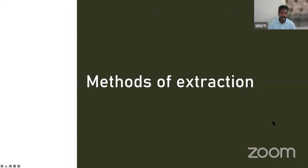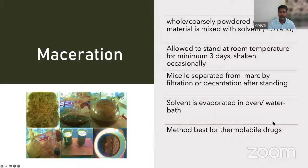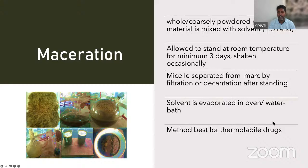Next is methods of extraction. The first general method is maceration. In maceration, whole or loosely powdered plant material is mixed with a solvent in the ratio of 1:5 (one part plant material to five parts solvent). The mixture is left at room temperature for 3 days with occasional shaking or using a shaker incubator. The miscella is separated from the marc by filtration or decantation. Solvent is evaporated in a water bath. This method is best for thermo-labile drugs as extraction occurs below 45-50 degrees.